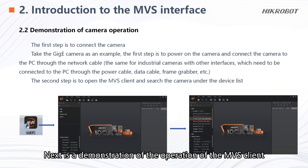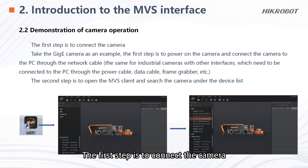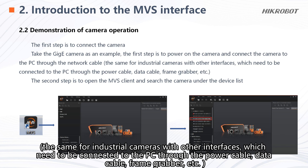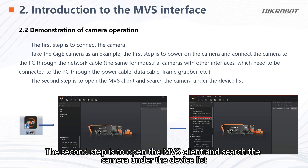Next is a demonstration of the operation of the MVS client. The first step is to connect the camera — taking the GigE camera as an example: power on the camera and connect it to the PC through a network cable. For industrial cameras with other interfaces, connect to the PC through power cable, data cable, frame grabber, etc. The second step is to open the MVS client and search for the camera under the device list.